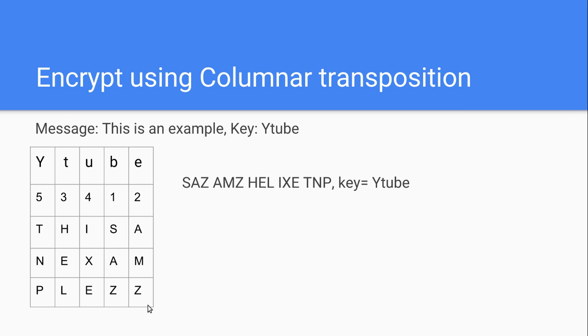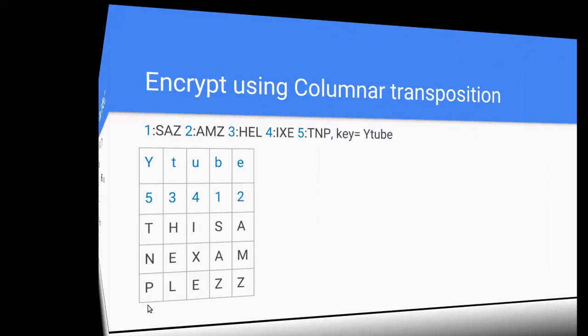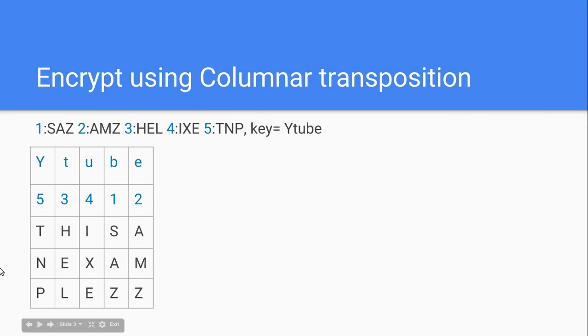Now, to decrypt, what we need is the message — S-A-Z, A-M-Z, H-E-L, I-X-E, T-N-P — with the key Y-tube. So then we write down Y-tube and assign the numbers 5, 3, 4, 1, 2, and I color-coded it 1 to 1.